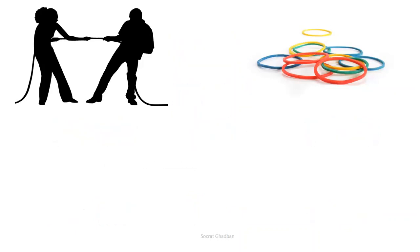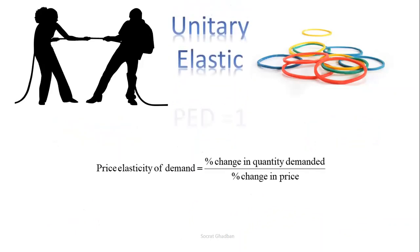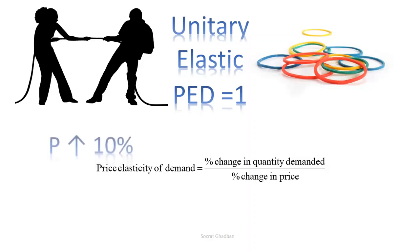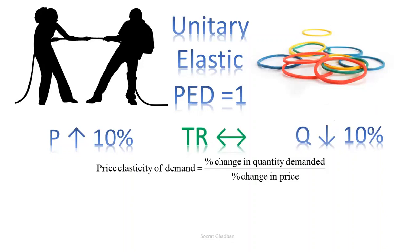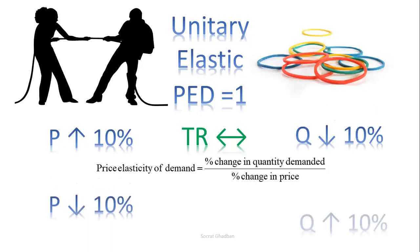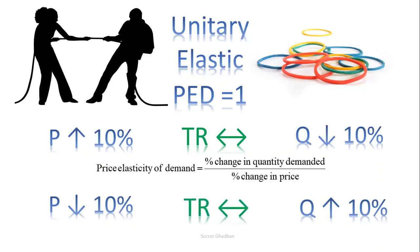The third type is unitary elastic demand, where the price elasticity of demand equals one in absolute value, meaning the percentage change in quantity demanded equals the percentage change in price. For example, if the price increases by 10%, the quantity demanded decreases by the same 10%, so total revenue stays constant because the increase equals the decrease. Similarly, if the price decreases by 10%, the quantity demanded increases by 10%, and total revenue remains constant.